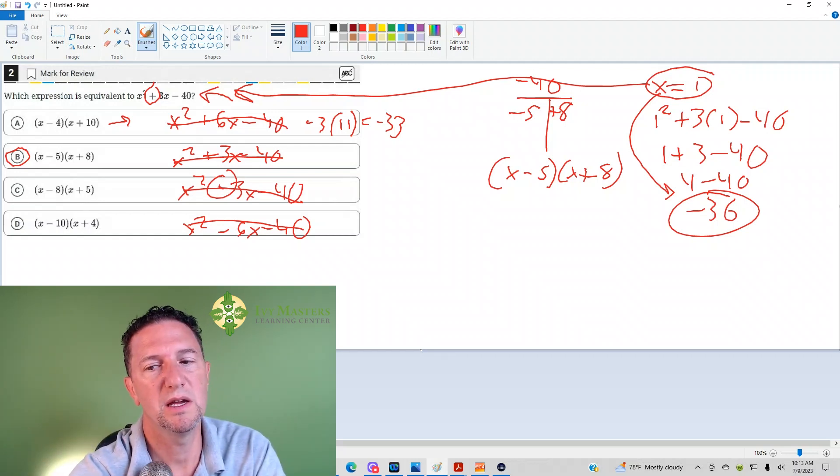If I plug it into answer choice B, 1 minus 5 is going to be negative 4, and then 1 plus 8 is going to give me 9. That gives me my negative 36 I'm looking for.